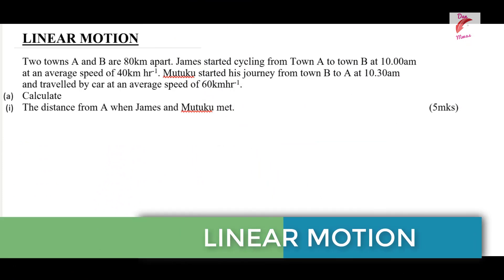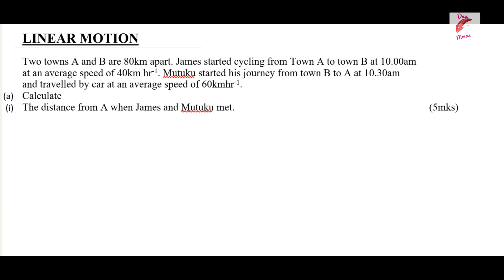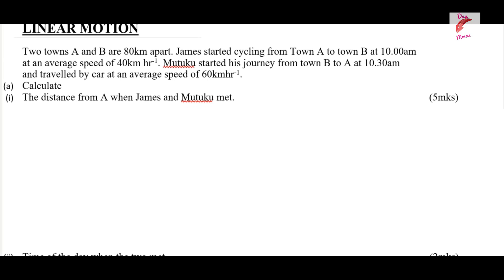Welcome, let us solve this question on linear motion. It reads: two towns A and B are 80 kilometers apart. James started cycling from town A to B at 10 a.m. at an average speed of 40 kilometers per hour. Mutuko started his journey from town B to A at 10:30 a.m. and traveled by car at an average speed of 60 kilometers per hour. Calculate the distance from A when James and Mutuko met.